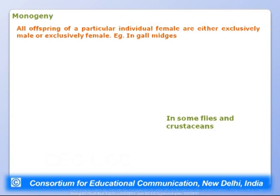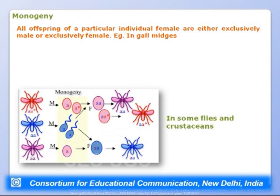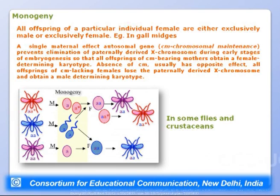Monogeny is a system where all offspring of a particular individual are exclusively male or exclusively female, found in gall midges and some flies and crustaceans. A single maternal-effect autosomal gene called chromosomal maintenance (CM) prevents elimination of the paternally derived X chromosome during early embryogenesis, so all offspring of CM-bearing mothers obtain a female-determining karyotype. Absence of CM has the opposite effect — all offspring of CM-lacking females lose the paternal X and obtain a male-determining karyotype.